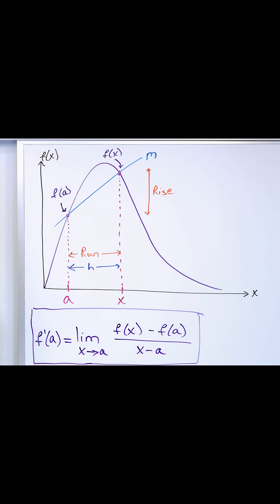For these two points, that would be the slope of the line through them. Then we allow the point x, this point x to slide closer and closer, bringing this point closer and closer to a.